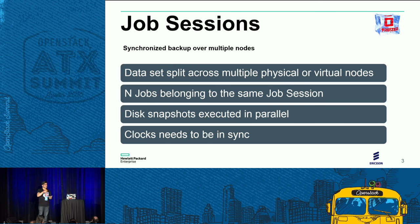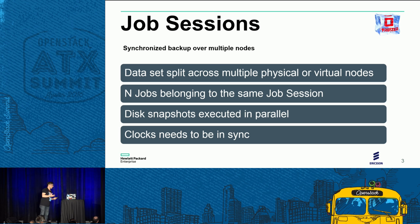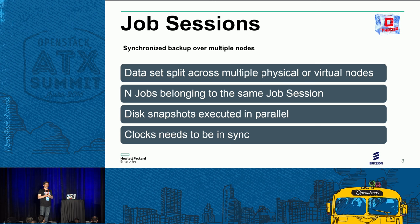In cases where your data set is spread across multiple nodes and you need to reduce inconsistency risks, you can leverage job sessions to execute backups on multiple nodes in a synchronized way. Basically there are N jobs belonging to the same job session ID, and the agent pulls from the API and detects that a job is tagged with that session ID.